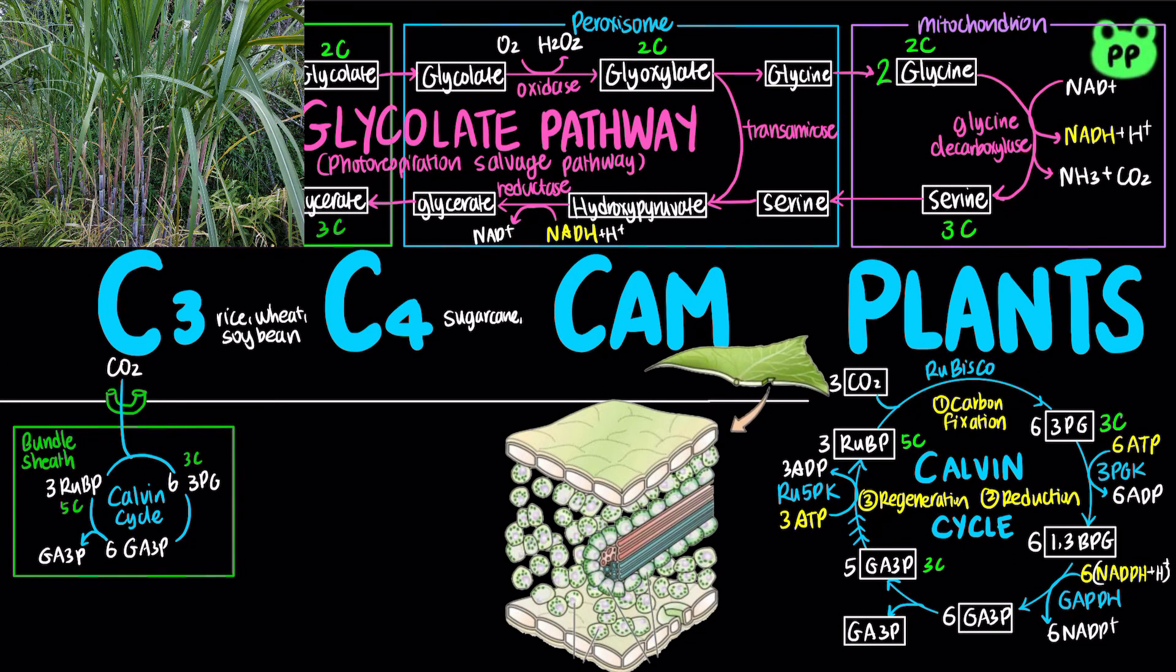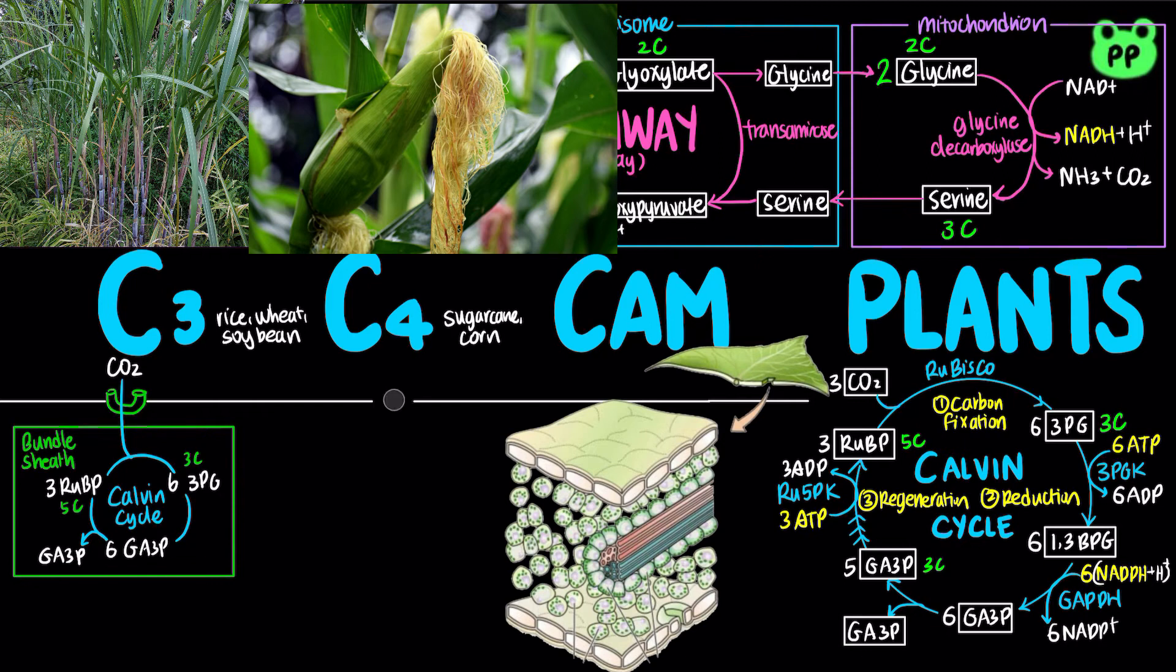C4 plants, including sugarcane, corn, and maize, typically grow at high light intensity and high temperatures. They have a modified carbon assimilation process that reduces photorespiration. To prevent oxygen from interacting with RUBISCO right away, carbon dioxide that enters the leaf through the stomata does not immediately enter the Calvin cycle.